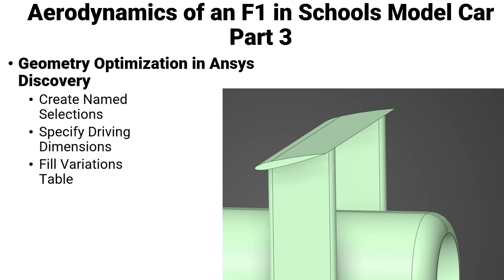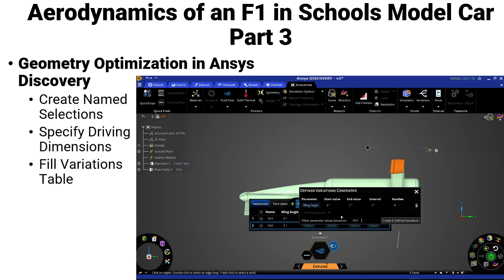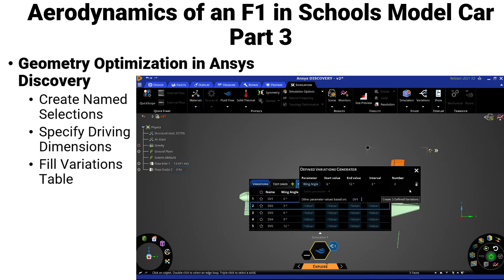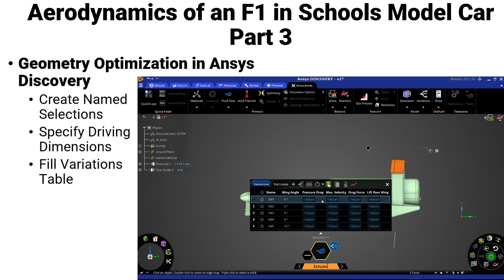Part 3 will deal with geometry optimization. Using the geometry and boundary conditions of Part 2, we will look at how to set up a parameterized study which changes the geometry of the rear wing. We'll track the force of lift on the rear wing, as well as the overall drag of the car as the orientation of the rear wing is changed.